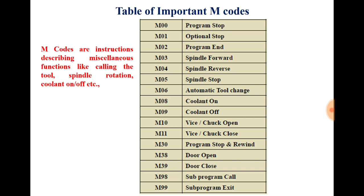Even after the completion of an operation, suppose you want to observe the cutting tool insert — for that also you can use the code M01. But one care should be taken: there is one button on the panel of the CNC machine called optional stop, and that should be on. Then after reading M01 by the controller, the program will stop optionally there. Otherwise it will not stop.